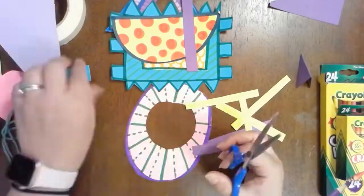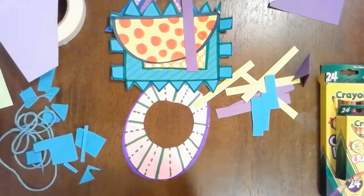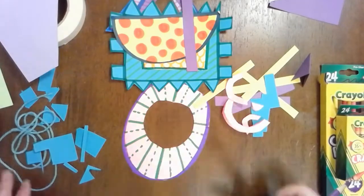With the extra scraps that you have, you can also cut them up so that you can use them to glue onto parts of your mobile.